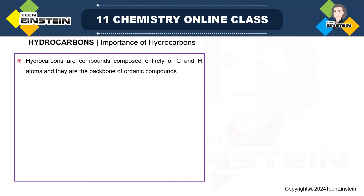Hydrocarbon, as the name suggests, hydro and carbon — H and carbon are the only two elements present. These compounds consist entirely of carbon and hydrogen atoms, and that is why they are the backbone of organic compounds. Whenever we say organic compounds, it is basically carbon compounds. To satisfy the valency of carbon, there is presence of hydrogen, and when there is no presence of heteroatoms like oxygen, nitrogen, or sulfur, there will be only carbon and hydrogen — and that is why these compounds are called hydrocarbons.